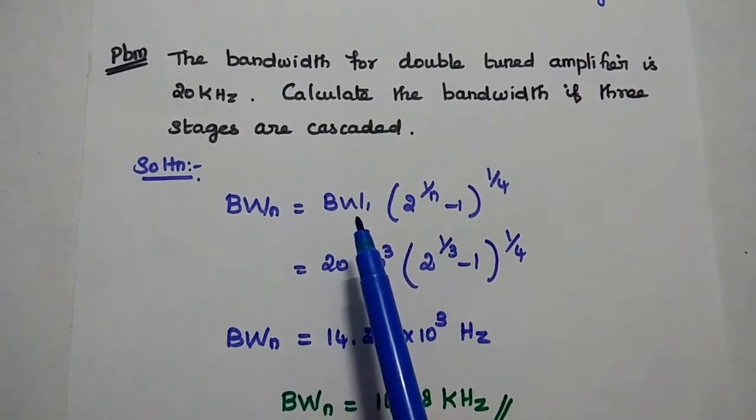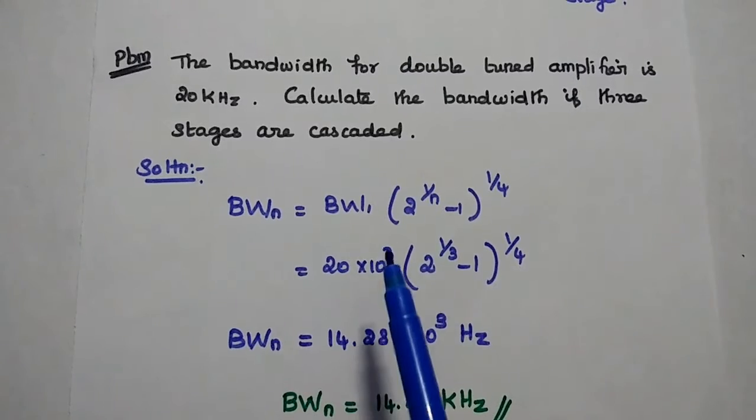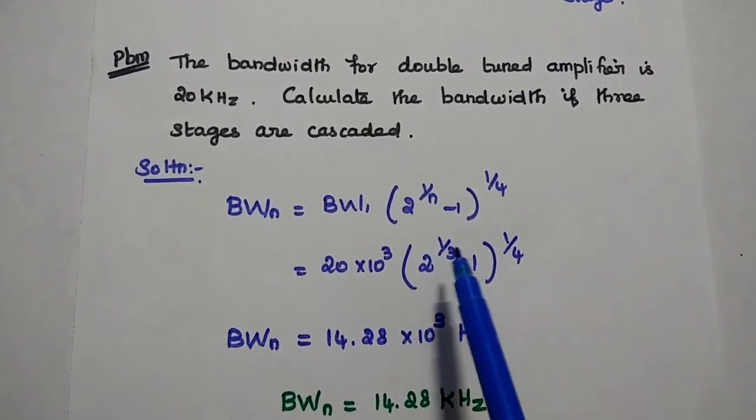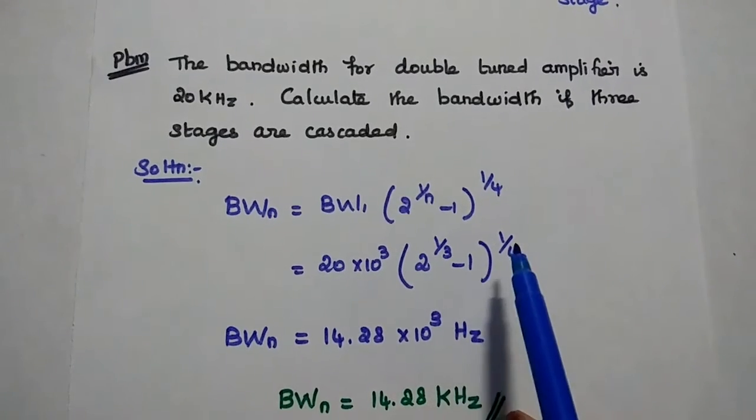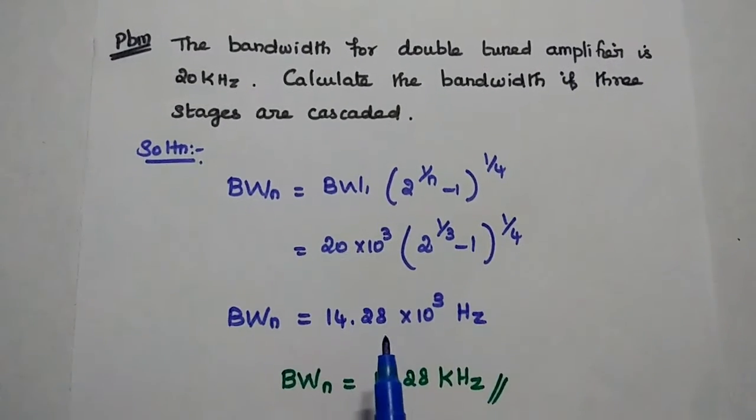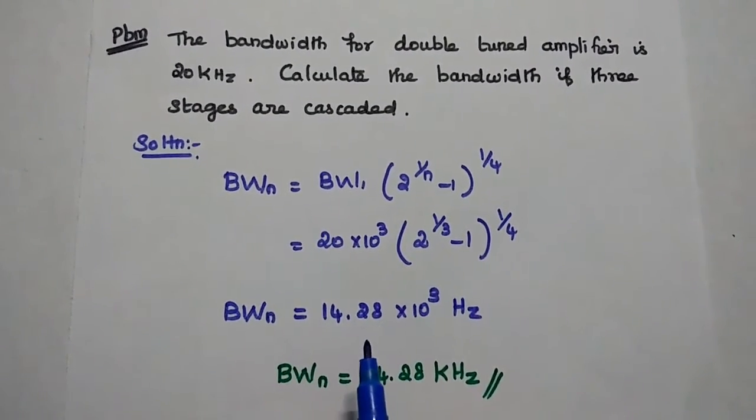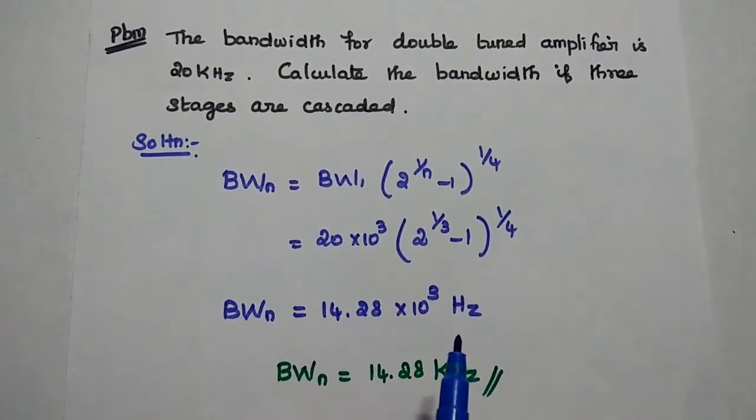Substitute the value for this bandwidth: 20 into 10 to the power 3, 2 power 1 by 3—3 stages means N equals 3—minus 1, the whole power 1 by 4. Then we can get the answer as 14.28 kilohertz.